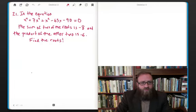I'm going to go ahead and read it out. It's up here on the big board. x to the 4th plus 7x to the 3rd plus x squared minus 63x minus 90 equals 0. What we know about this equation is that the sum of two of the roots is negative 8, and the product of the other two roots is negative 6. Find the roots.